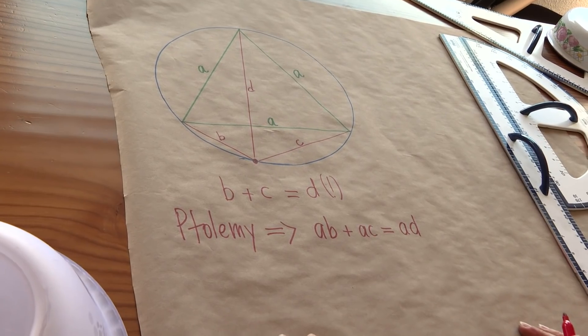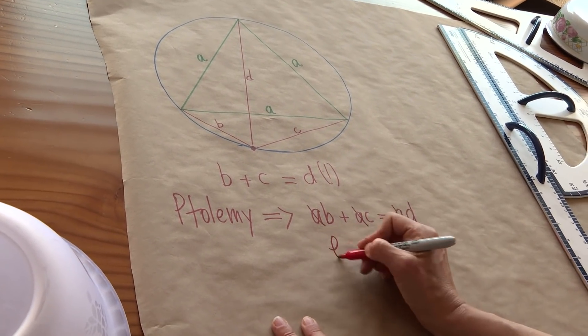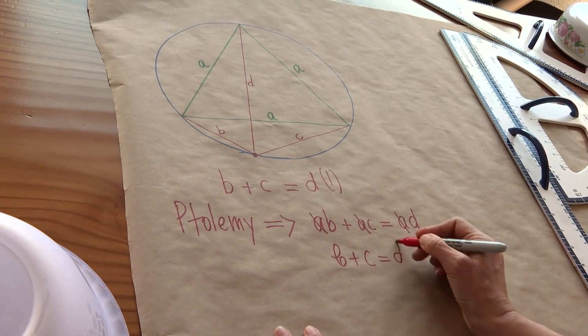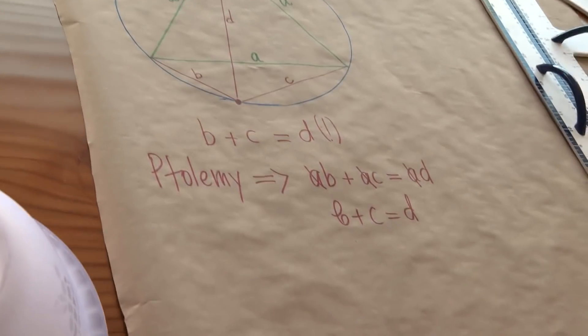Hmm. Again, we see repetition. Let's kill it. We divide by A, and we get exactly what we wanted. The two shorter segments add up to the long one.